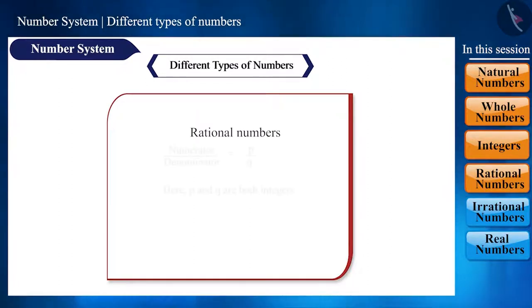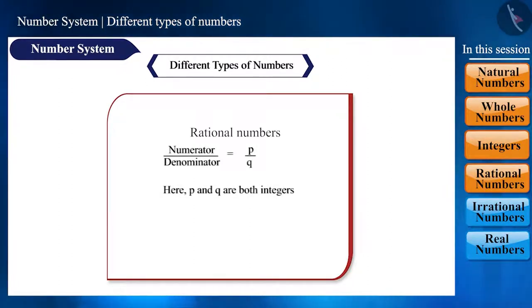Rational number is the one we represent in the form P by Q, where both P and Q are integers and Q is not 0. We refer to it with the symbol Q, which is derived from the English word quotient.